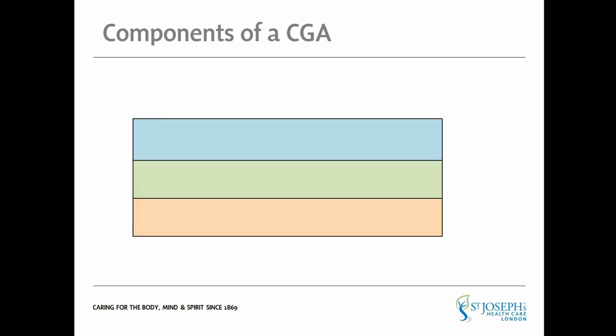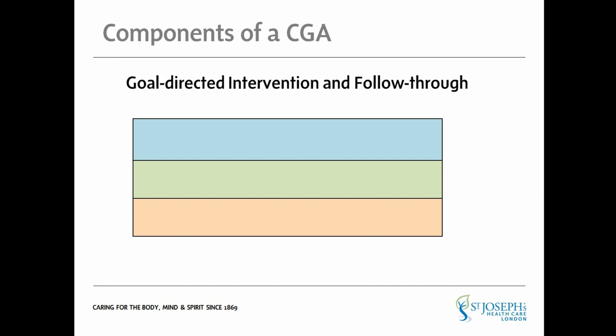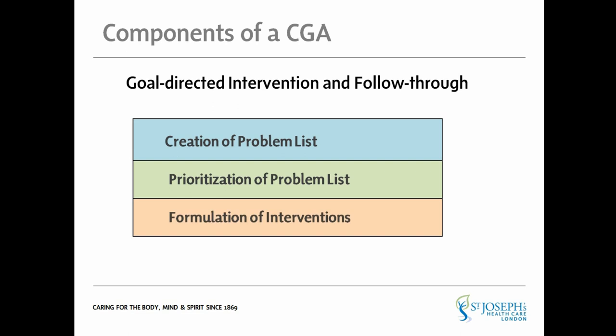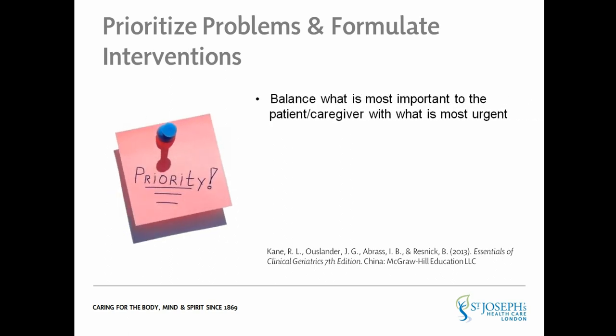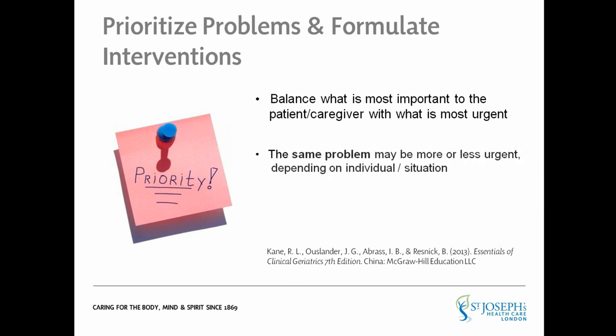Once screening and comprehensive assessment have been completed, the second critical piece of a CGA is goal-directed intervention and follow-through. Through screening and assessment, areas of concern are identified and documented. Problem areas are then prioritized and interventions are formulated to address priority problems. When prioritizing which problems to address first, it's important to balance what is most important to the patient and their caregivers with those things that may pose a safety risk or seem most urgent to the health care provider. The same problem may be more or less urgent for different individuals, depending on their situation and the interaction of other problems identified.